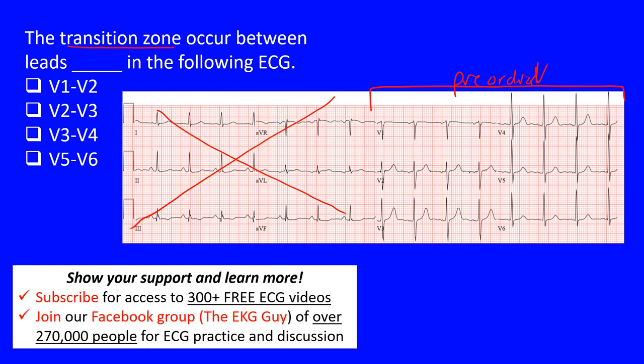It's really dependent on the technician placing the leads, so don't put too much weight on that, but oftentimes you'll see them and it can be helpful if they're placed properly. Normal transition occurs between V3 and V4. What do we mean by transition? It's when in the precordial leads we go from being mostly negative to mostly positive.